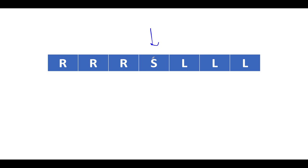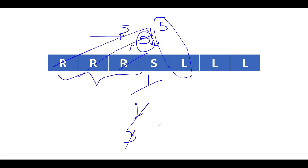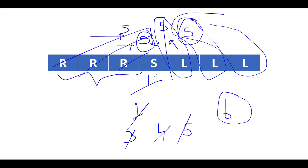With S in the middle again: R and S collide — score updates to one; R and S — score updates to two; R and S — score updates to three. The four cars become stationary, then L and S collide — score to four; L and S — score to five; L and S — score to six. The total score remains unchanged regardless of S placement in the middle.